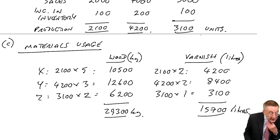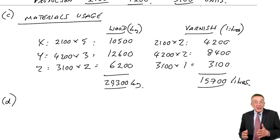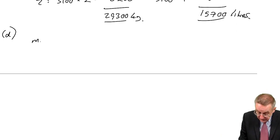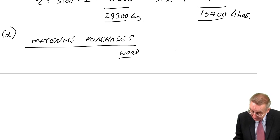What do we need now? A materials purchases budget. We know what materials we're going to use. Why should the purchases be different? Because of inventories of raw materials. We're told what the opening inventories of wood and varnish are, and what we're planning the closing inventories to be. Just as we were doing earlier, to get the purchases, we need to adjust the usage by the change in inventory. So, side by side, wood and varnish.